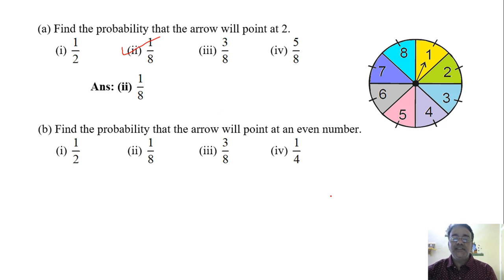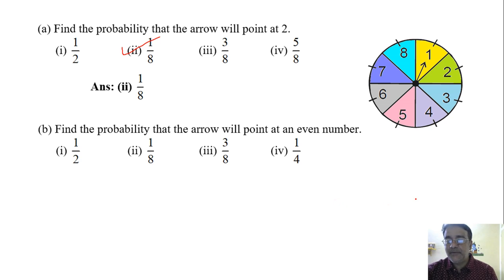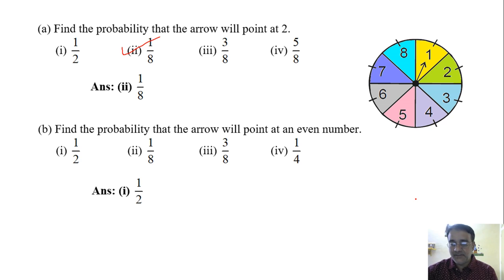Second question: find the probability that the arrow will point at an even number. So how many even numbers are there? 4. So what is the probability of getting an even number? 4 by 8, that is 1 by 2. So the correct option is the first one.